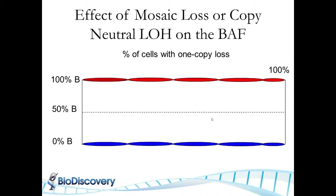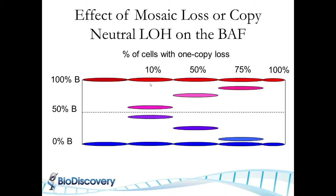In mosaic or copy neutral LOH mosaic samples, at 100% aberrant cells you expect BAF bands at 0% or 100%, but as normal cell contamination increases, additional intermediate bands appear. As the percentage of aberrant cells decreases toward zero, you transition from two bands to a three-band pattern. The position of these intermediate bands can be used to estimate the percentage of tumor or aberrant cells in the sample.